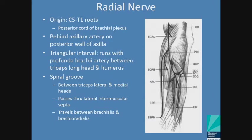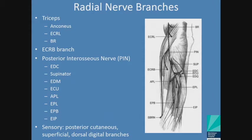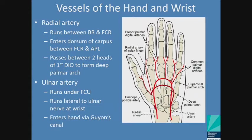The radial nerve is fed by C5 to T1 nerve roots, posterior cord of the brachial plexus. It passes behind the axillary artery, travels between the triceps lateral and medial heads, passes through the lateral intermuscular septum, and travels between the brachialis and brachioradialis in the proximal forearm. The radial nerve feeds all of the extensor muscles, so wrist extension and digital extension are governed by the radial nerve. Vessels of the hand and wrist revolve almost entirely around the radial and ulnar arteries, which form the superficial and deep palmar arches.